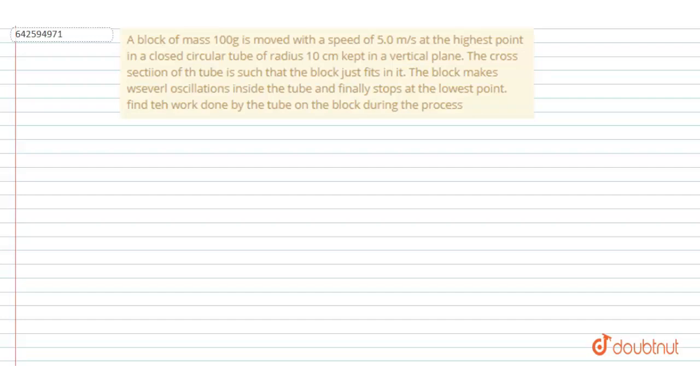A block of mass 100 grams is moved with a speed of 5 meters per second at the highest point in a closed circular tube of radius 10 centimeters kept in a vertical plane.